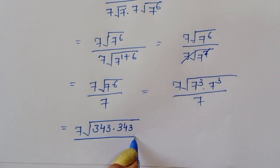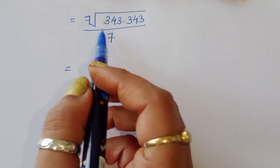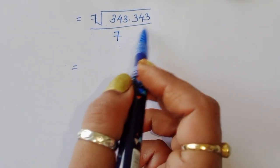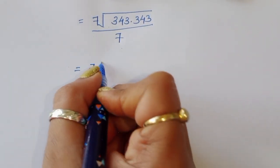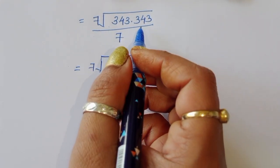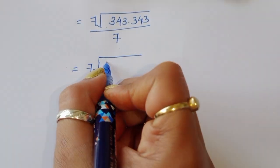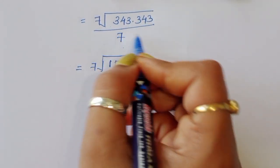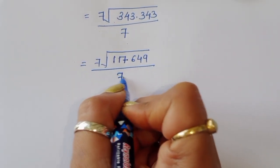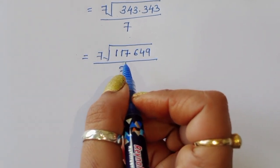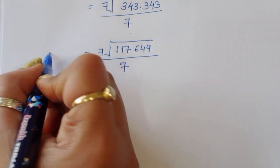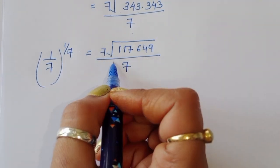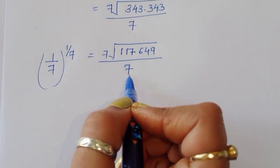343 times 343 equals 117,649. So the value of (1/7)^(1/7) equals the 7th root of 117,649 divided by 7. This is the final solution.